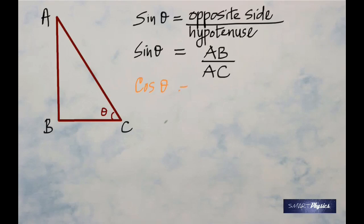Now cos theta is defined as the adjacent side. Since the angle is here, this is the adjacent side. So cos theta is the ratio of the adjacent side to the hypotenuse. The adjacent side is BC and the hypotenuse is AC, so it's going to be BC by AC.